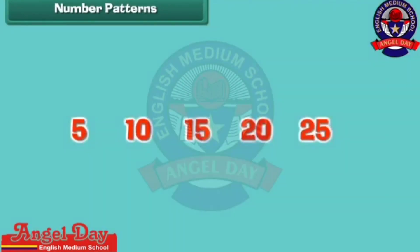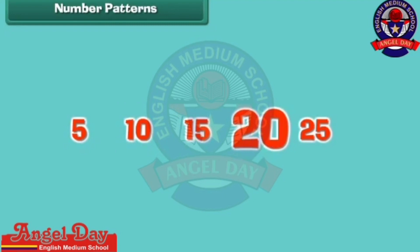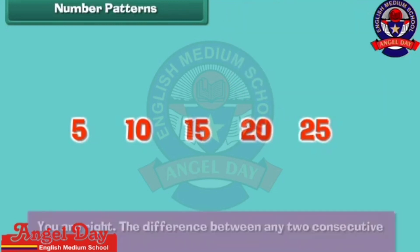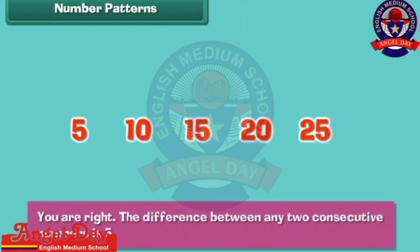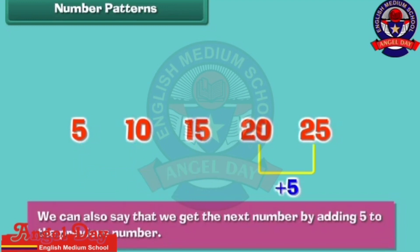Let us look at another number pattern: five, ten, fifteen, twenty, twenty-five. Can you see why this arrangement of numbers is a pattern? The difference between any two consecutive numbers is five. We can also say that we get the next number by adding five to the previous number.